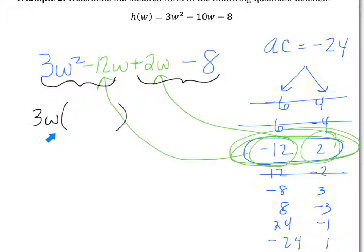Take this 3W and mentally divide it in. What's 3W squared divided by 3W? W. What's negative 12W over 3W? Negative 4. So we get 3W times the quantity W minus 4. How do I know that's right? Multiply back: 3W times W is 3W squared, and 3W times negative 4 is negative 12W. So I know that's correct.